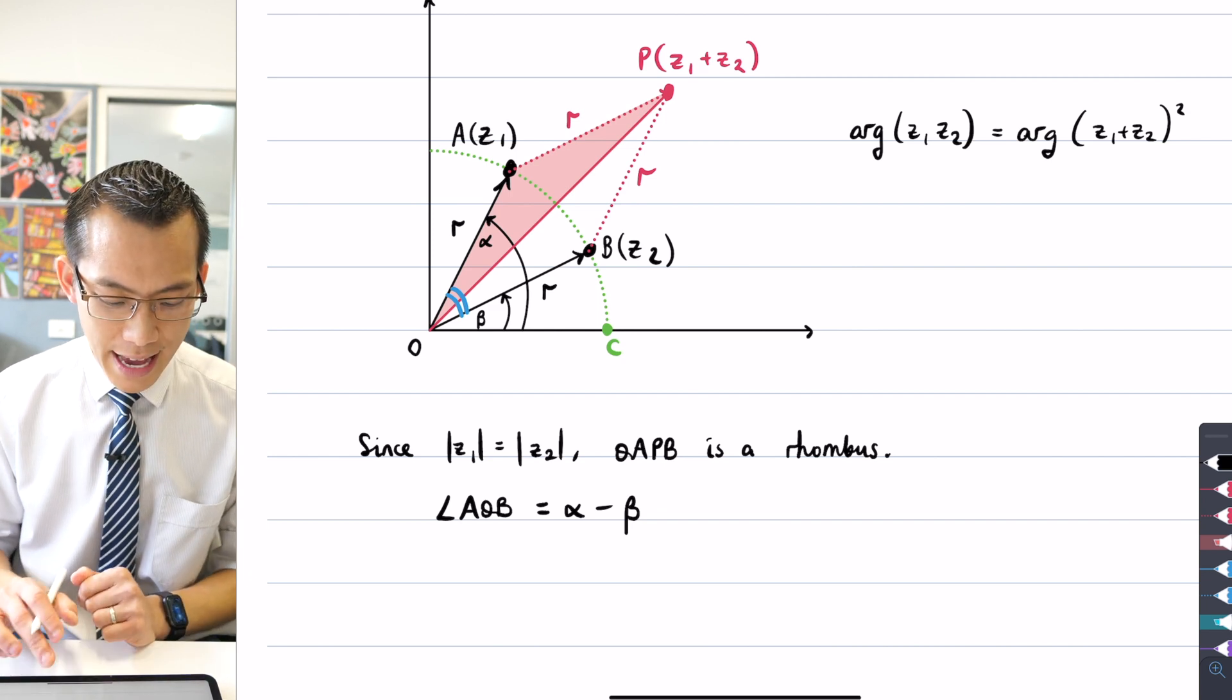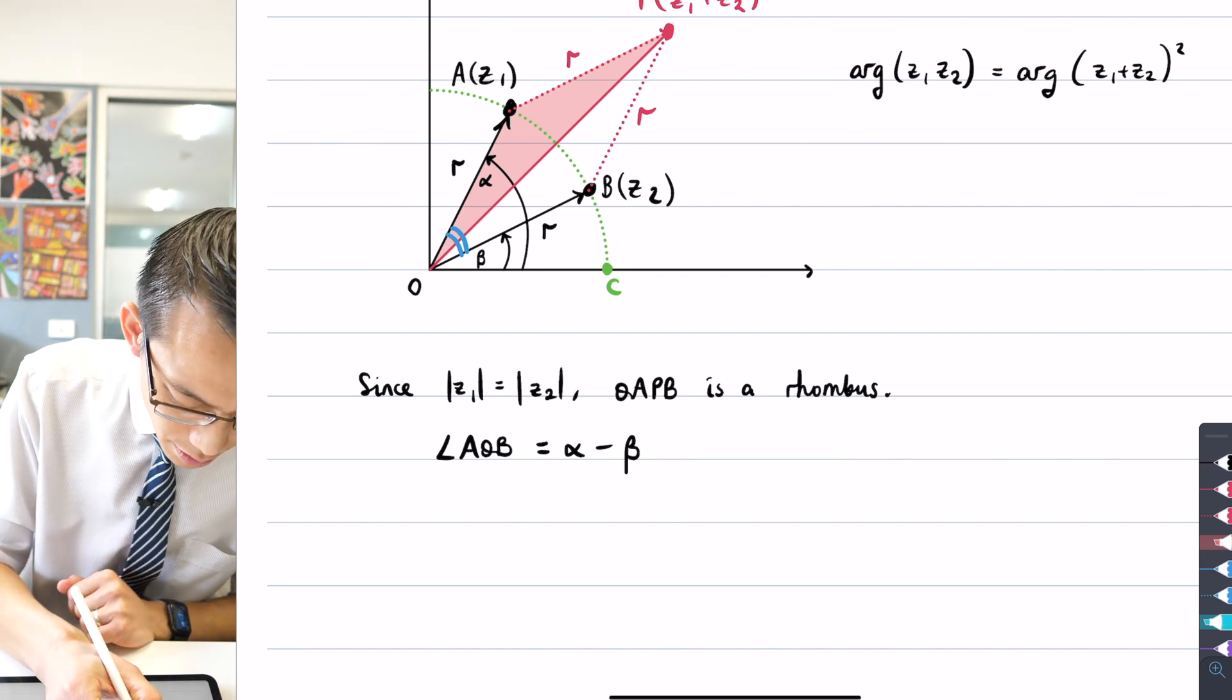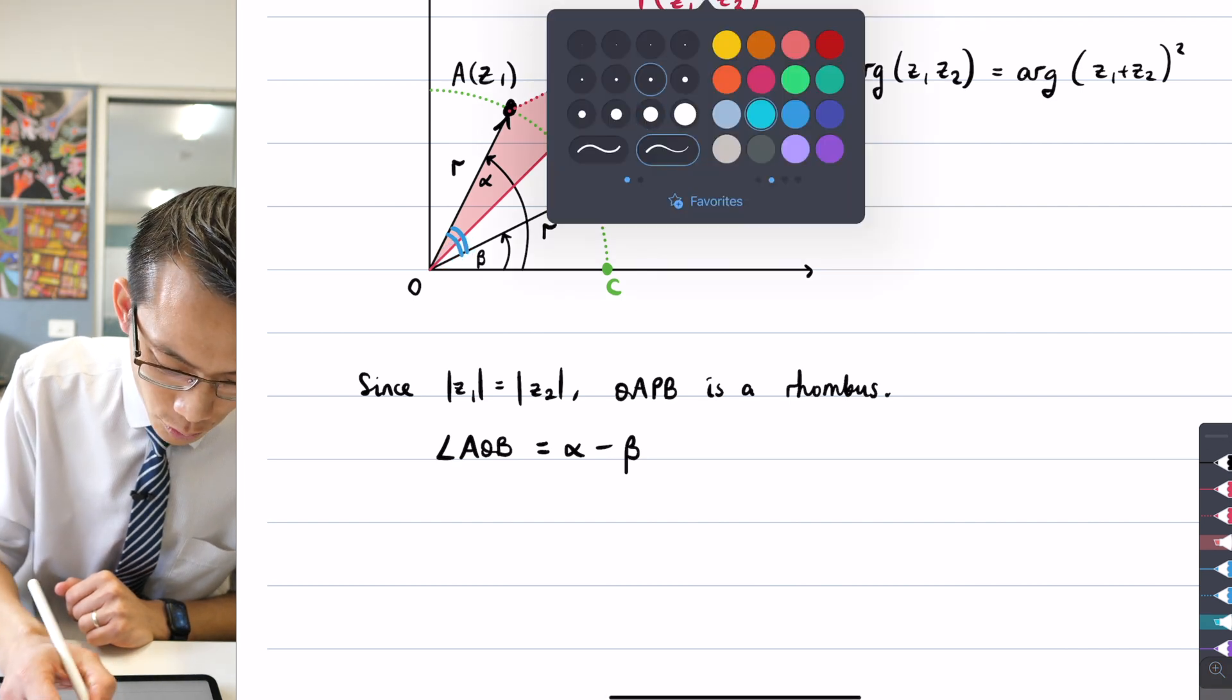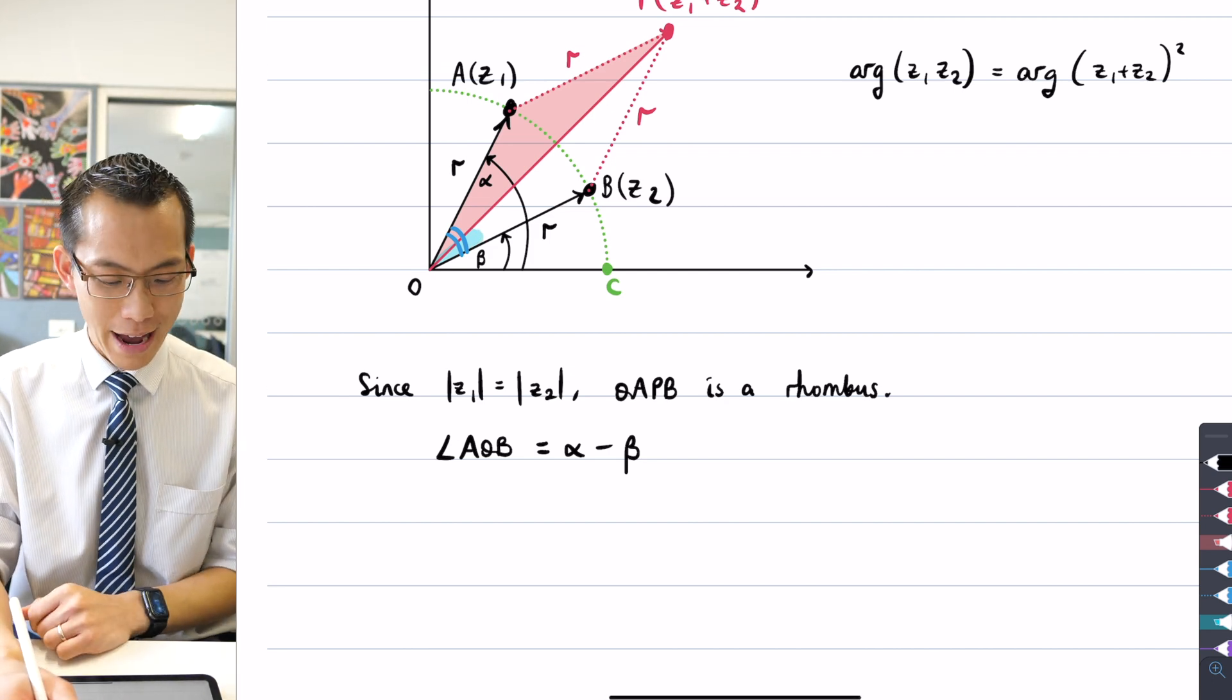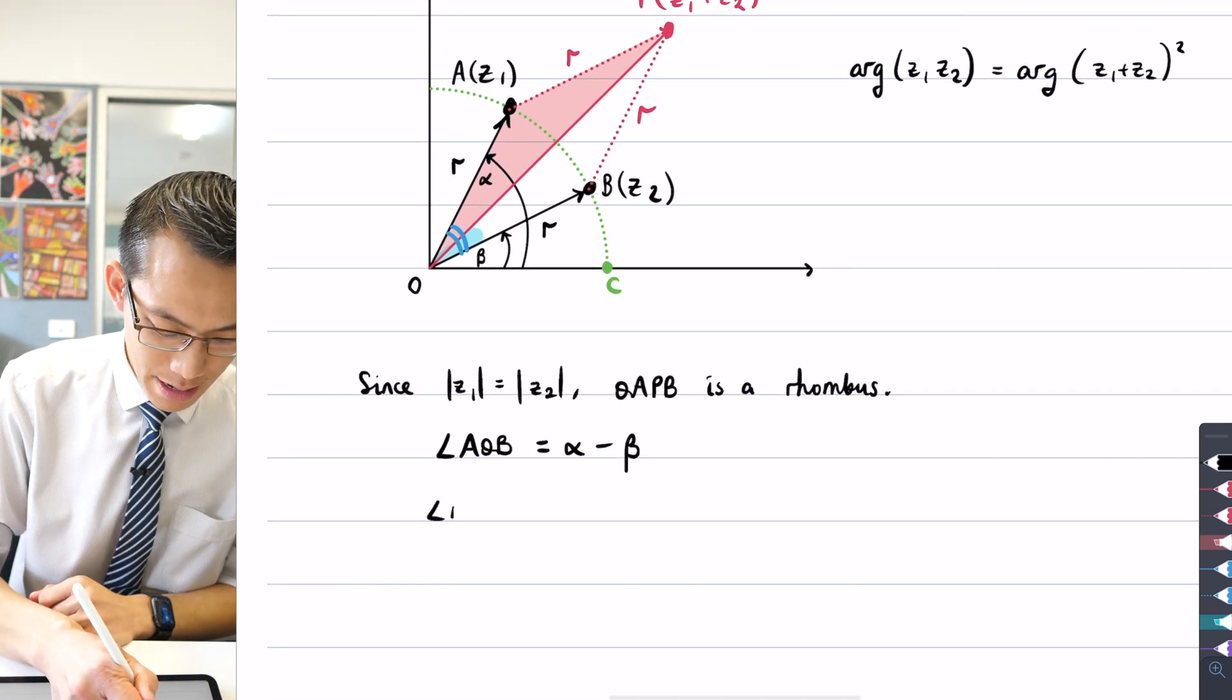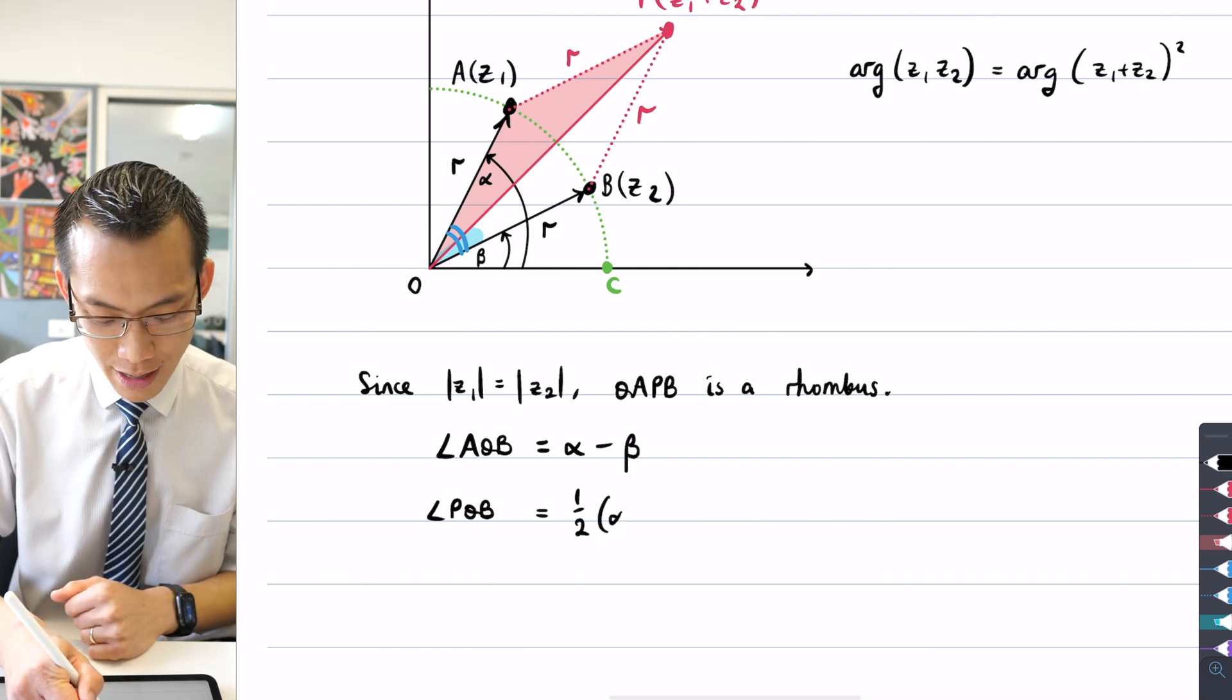Now, I can then say, well, if I look at the bottom part of this angle, which I'm going to highlight here. This angle in here. Now, this angle is going to be half of that angle AOB. Angle POB is going to be exactly half of that angle. How can I reason that?